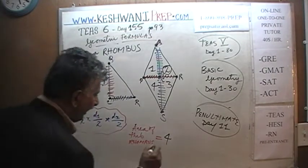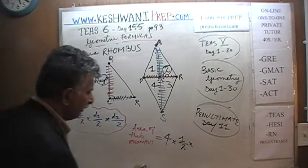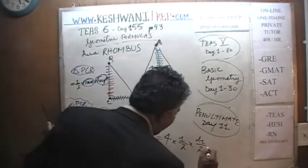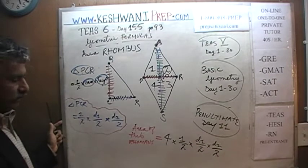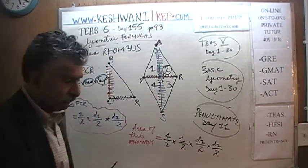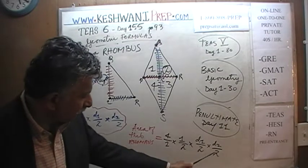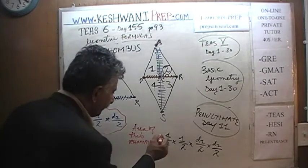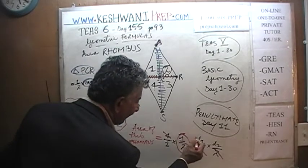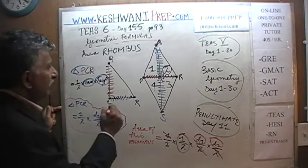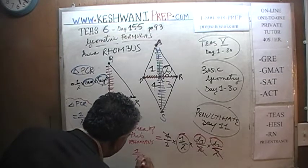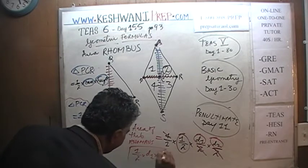The area of the rhombus equals four times one-half times (D1 over 2) times (D2 over 2). I see four on top and two times two equals four on the bottom, so those cancel. We divide top and bottom by two and simplify, and we get: the area of the rhombus is simply one-half times D1 times D2 — one-half times the length of the first diagonal times the second diagonal. All done. And that's what you see in the book.